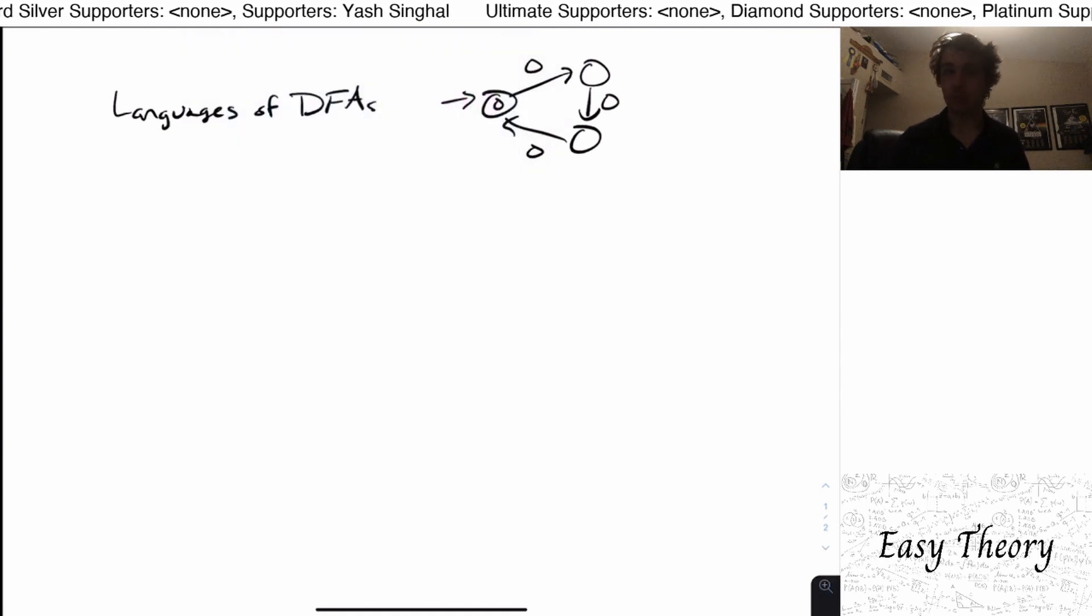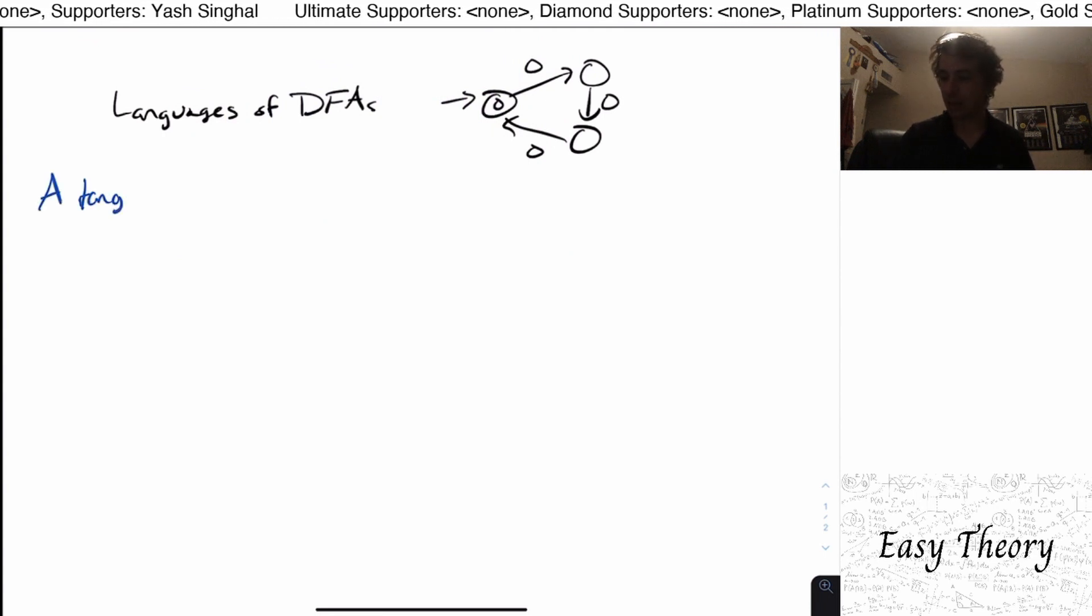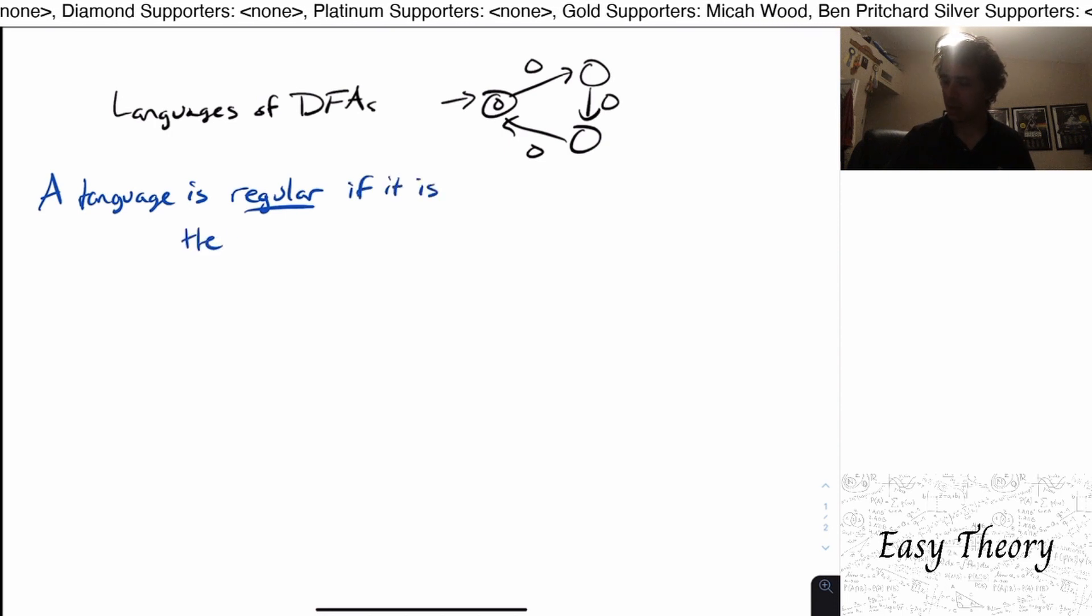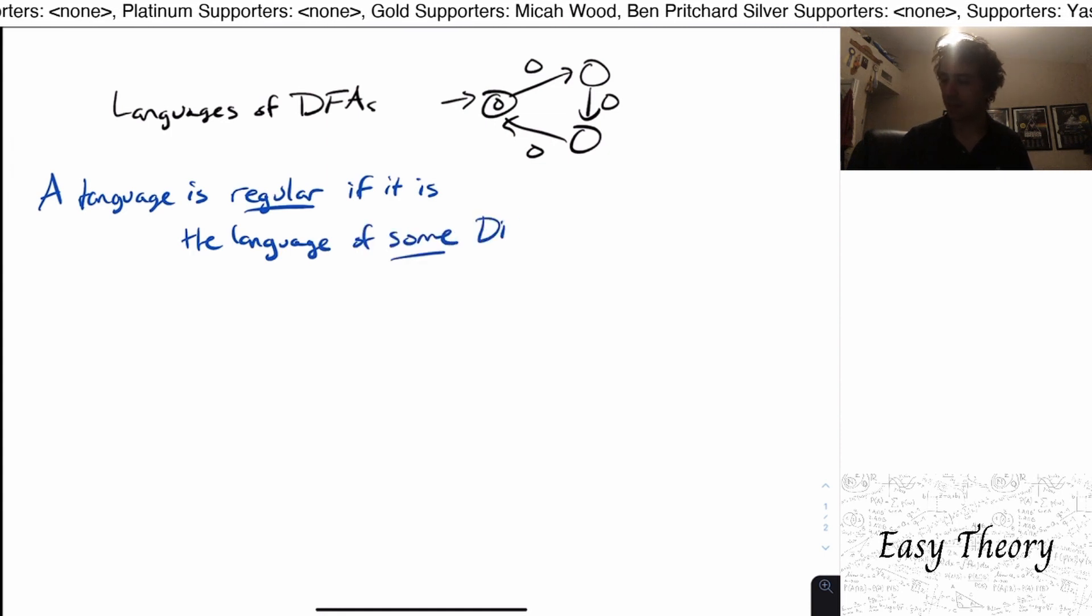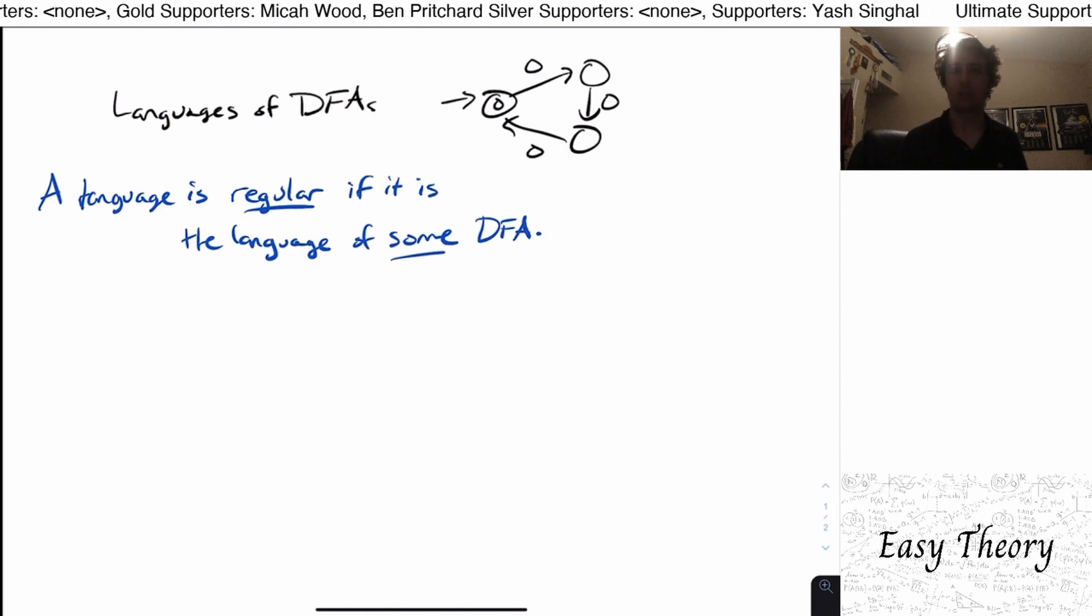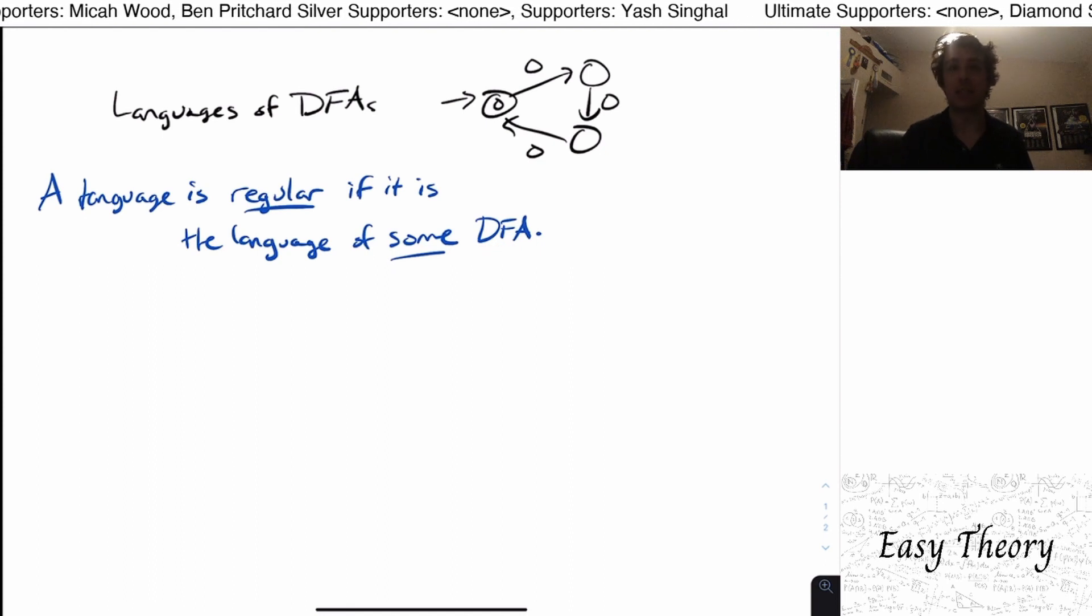What we're going to be doing is we're going to give a name to these languages. So we're going to say a language is regular. This is actually a term that we'll be using over and over throughout this lecture series. So a language is regular if it is the language of some DFA. So as long as we know that a DFA exists for that language, therefore the language is regular. And any language that doesn't have any DFA for it cannot possibly be regular.